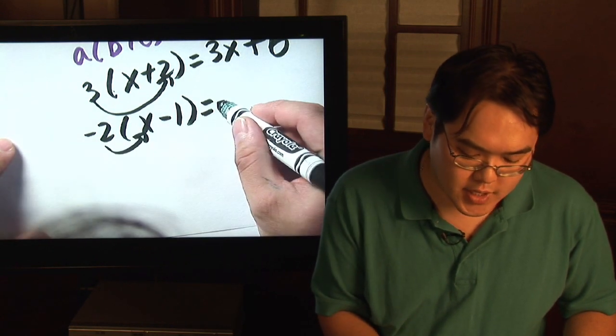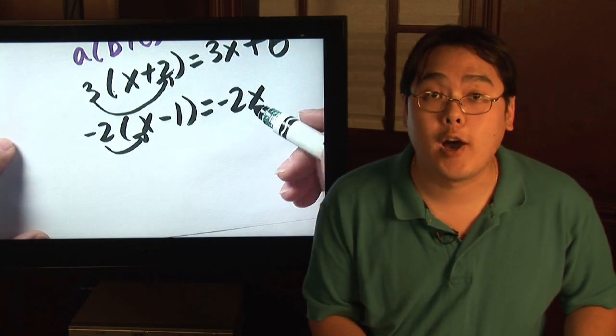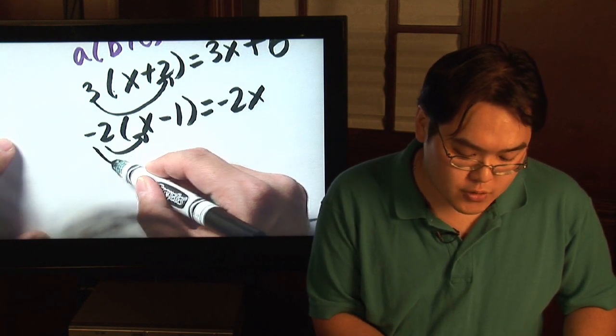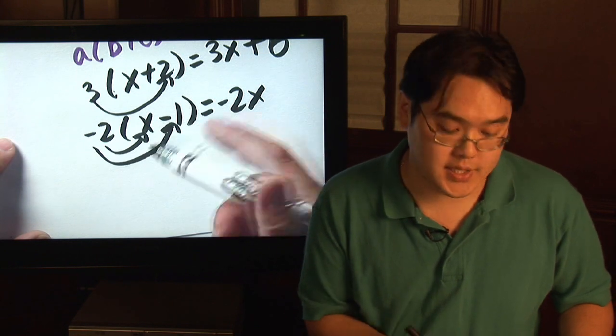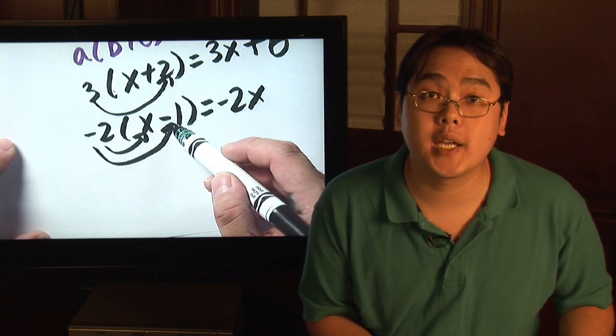Negative 2 times x is going to give you negative 2x. Now, for the next term, negative 2 times negative 1. Now you have to remember the properties of signs. Negative times a negative is going to give you a positive.